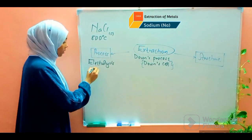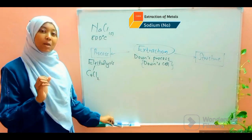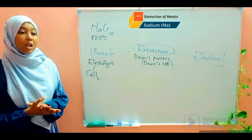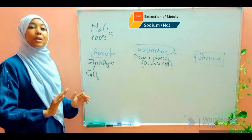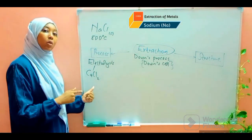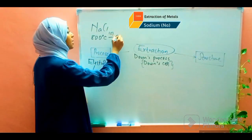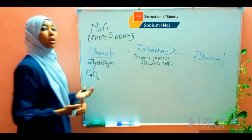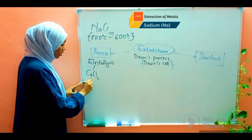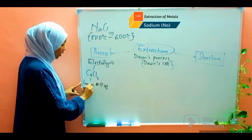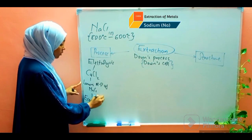The impurity introduced is calcium chloride. Going back to Form 1 work — adding an impurity to a pure substance lowers the melting point. The same thing happens here: adding calcium chloride to sodium chloride drops the melting point from 800 degrees Celsius to around 600 degrees Celsius. This makes the process economical. So calcium chloride is added because it lowers the melting point of sodium chloride, making the whole process more economical.